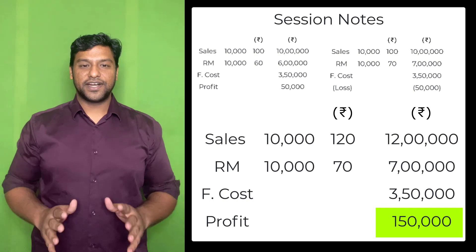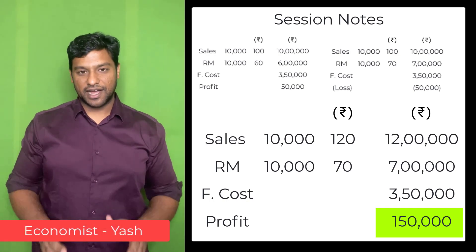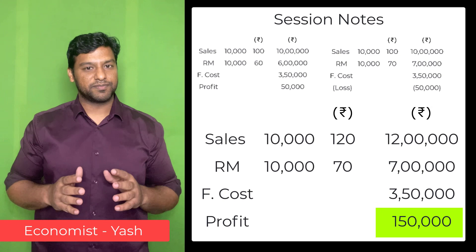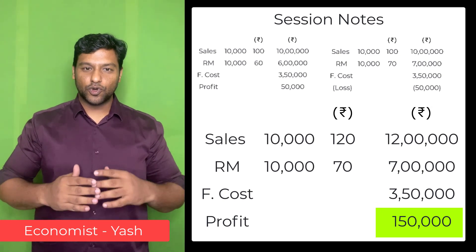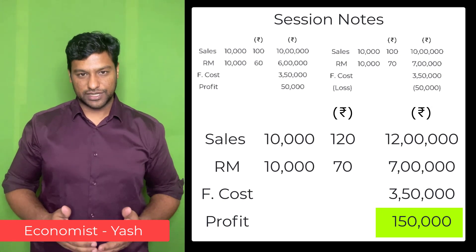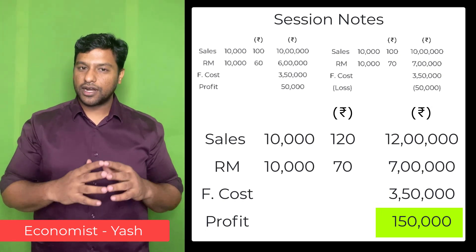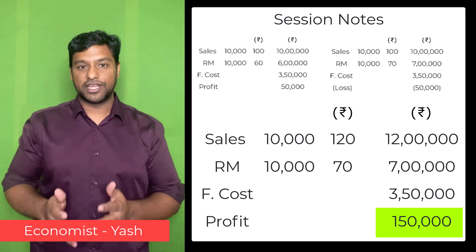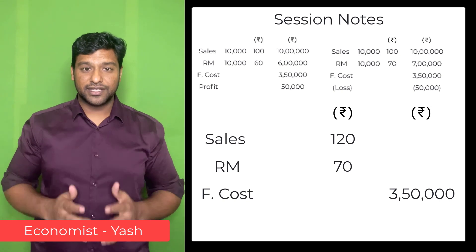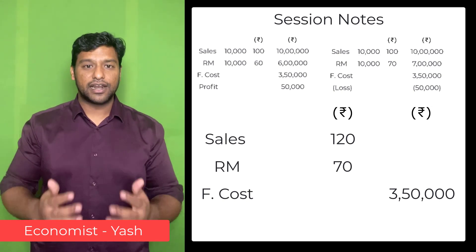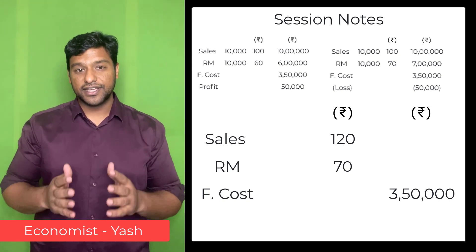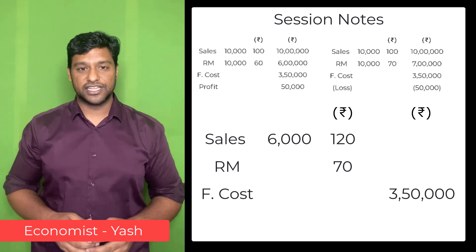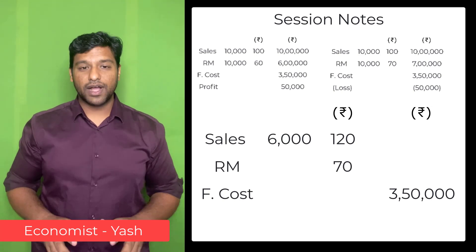Hmm, sounds right, but ma'am I actually think this idea may not work. Ma'am, as per the law of demand, if we increase our price, our sales quantity will decrease. If we go from ₹100 to ₹120, we won't be able to sell 10,000 units anymore. In fact, keeping price elasticity in mind, I've calculated that we will only be able to sell 6,000 units at a sales price of ₹120.